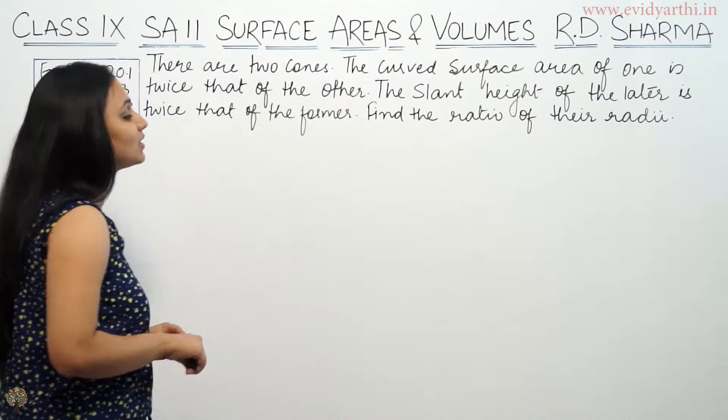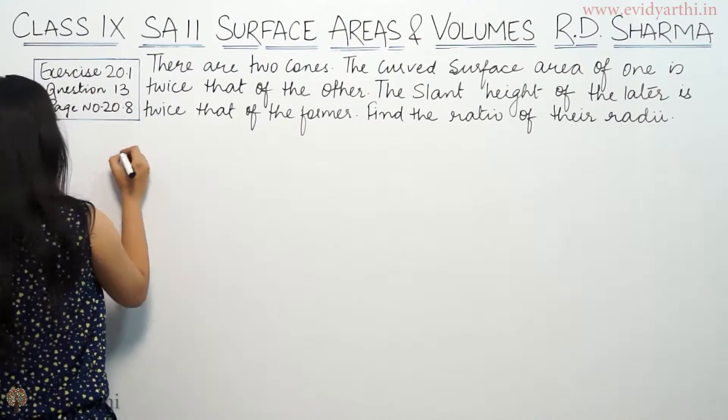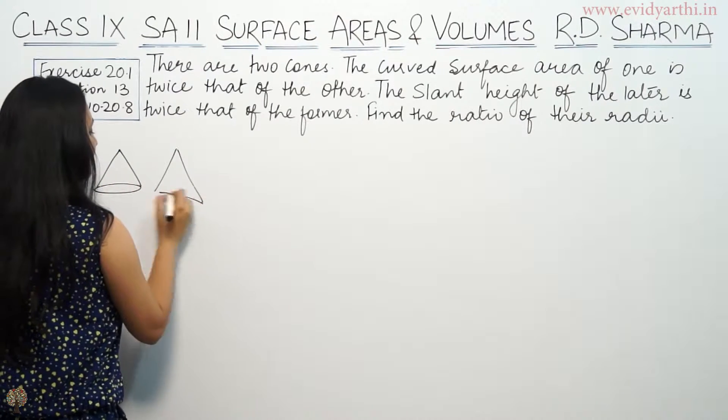This says there are two cones. The curved surface area of one is twice that of the other. So we have two cones here. One cone here and another is this.